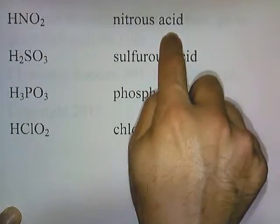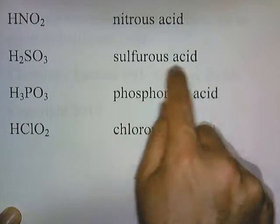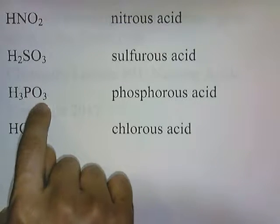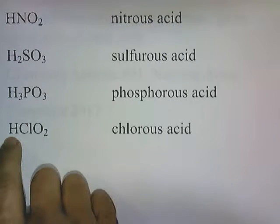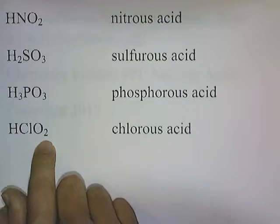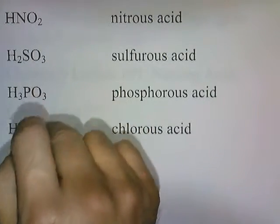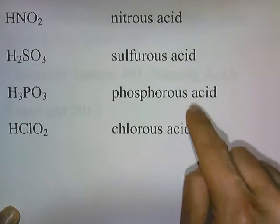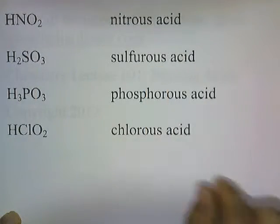HNO2 is nitrous acid — if it were HNO3 it would be nitric acid. H2SO3 is sulfurous acid — H2SO4 would be sulfuric acid. H3PO3 is phosphorous acid — H3PO4 would be phosphoric acid. HClO2 is chlorous acid — HClO3 would be chloric acid. So if you have nitric, sulfuric, phosphoric, and chloric acid memorized, it's not a big leap to also know nitrous, sulfurous, phosphorous, and chlorous acid — the same acids with one less oxygen and '-ous' instead of '-ic'.